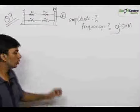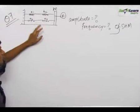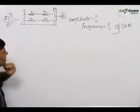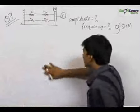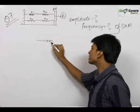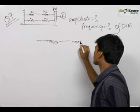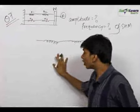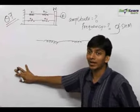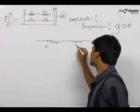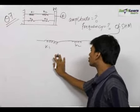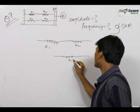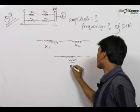There is no doubt that this motion is SHM because it is a combination of spring and mass. Here is a trick: whenever there are springs in series, we apply the formula for combination of resistances in parallel. This is k1, this is k2, therefore the resultant spring constant can be assumed to be k1·k2 upon k1 plus k2.